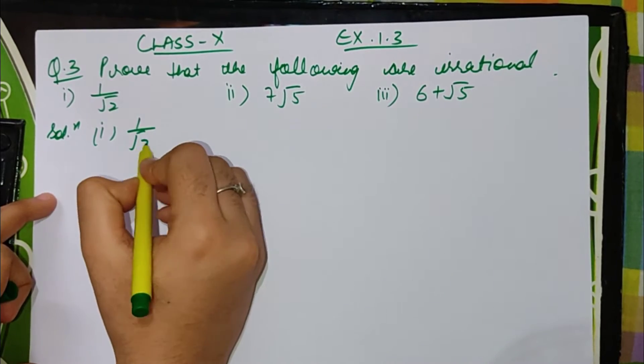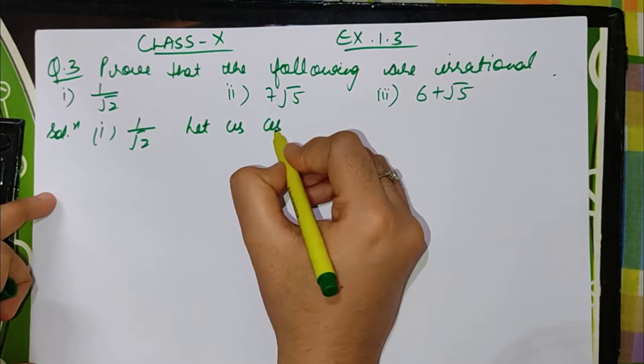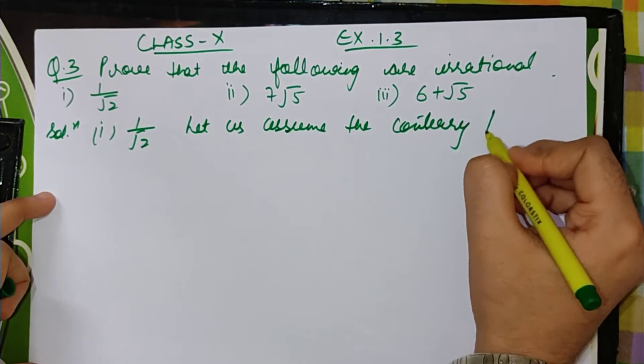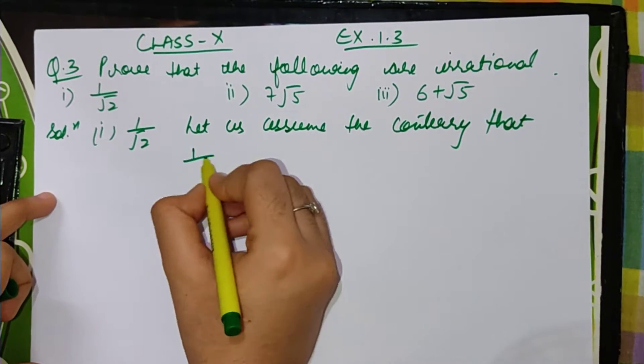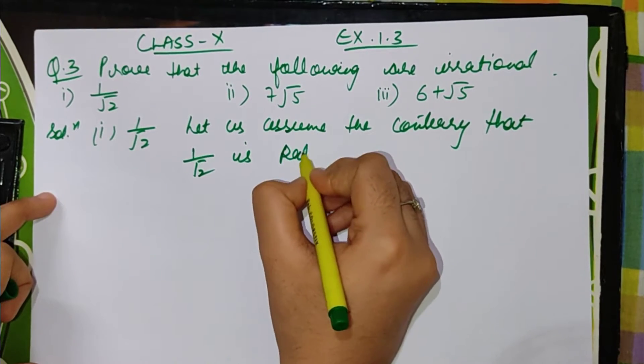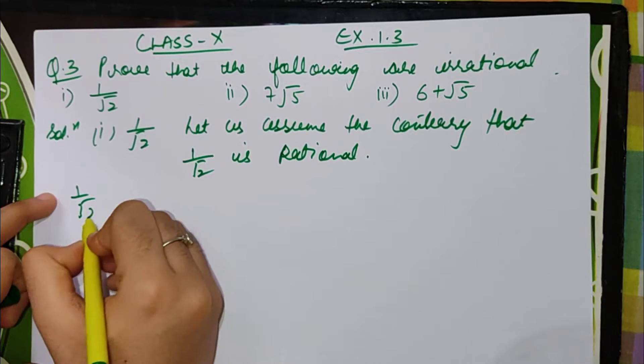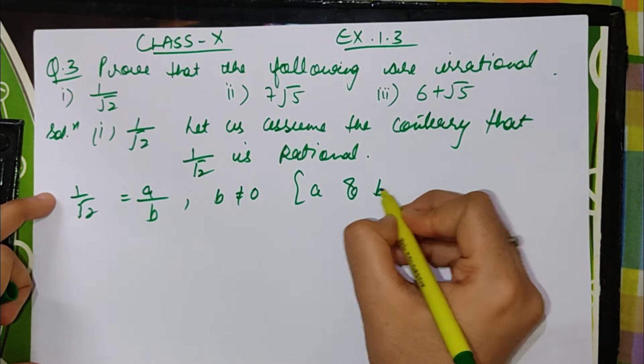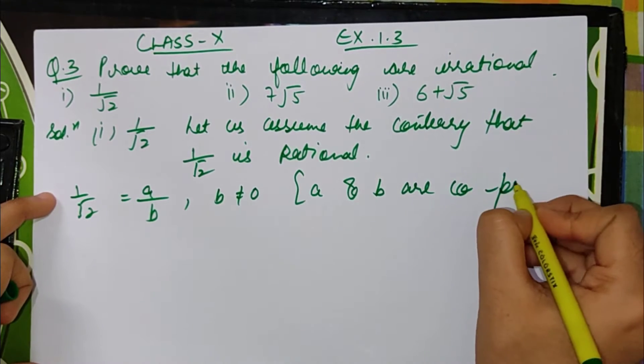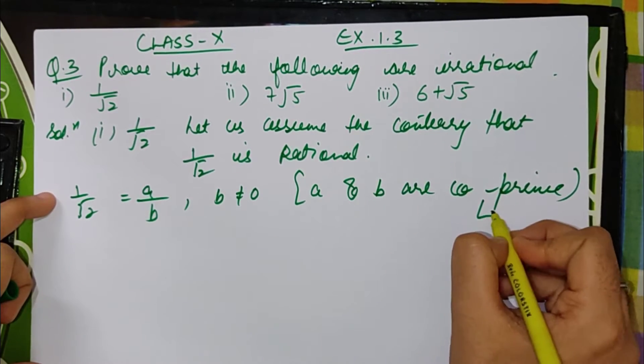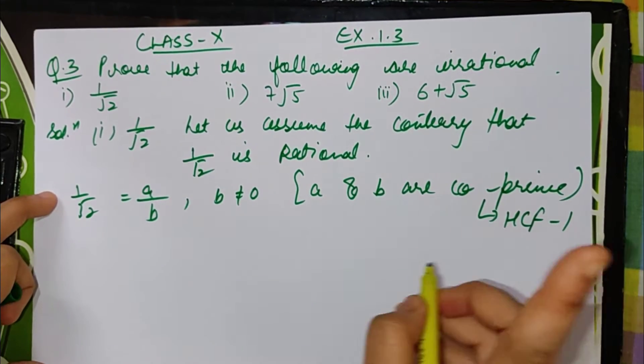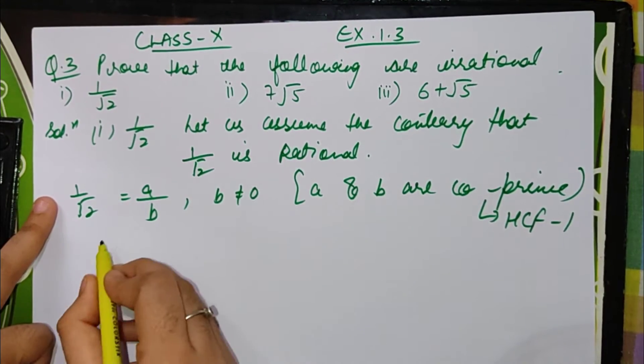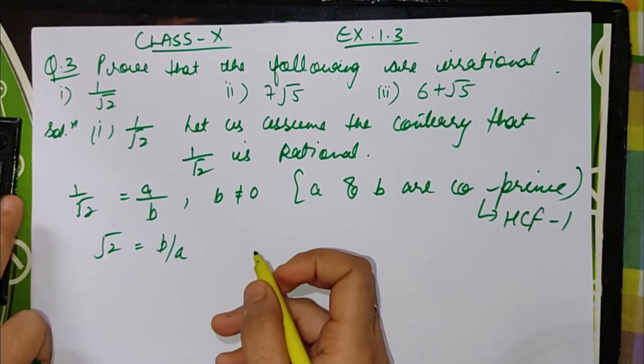First we will take 1 by root 2. Let us assume the contrary that this 1 by root 2 is rational. This means that 1 by root 2 is in the form of a by b where b is not equal to 0. A and b are co-primes. Co-primes means HCF 1 is going to be a common factor. So now we can write root 2 equals b by a.